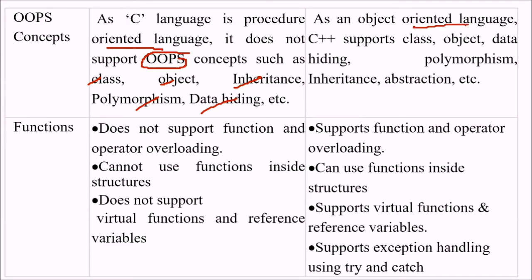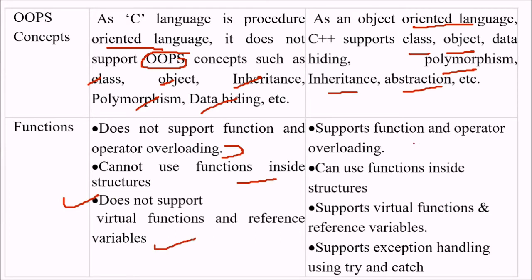While C++, being an object-oriented language, supports class, object, data hiding, polymorphism, inheritance, and abstraction. In terms of functions, C does not support function and operator overloading. It cannot use functions inside structures and does not support virtual functions and reference variables. C++ supports function and operator overloading.